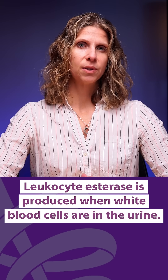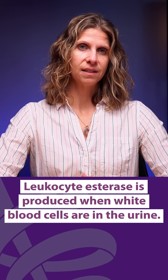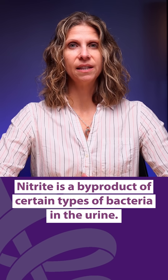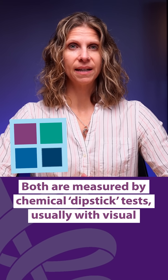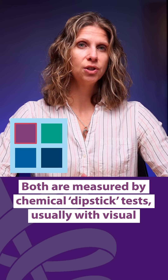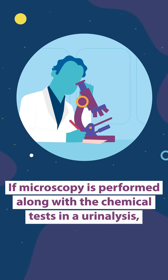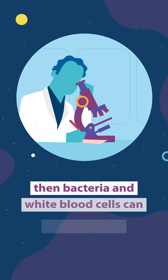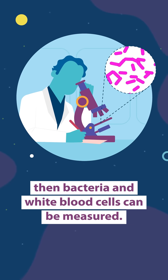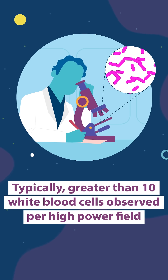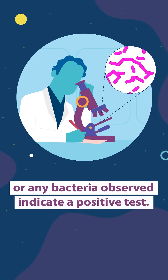Leukocyte esterase is produced when white blood cells are in the urine. Nitrite is a byproduct of certain types of bacteria in the urine. Both are measured by chemical dipstick tests, usually with visual interpretations as either positive or negative. If microscopy is performed, bacteria and white blood cells can be measured. Typically, greater than 10 white blood cells observed per high-powered field or any bacteria observed indicate a positive test.